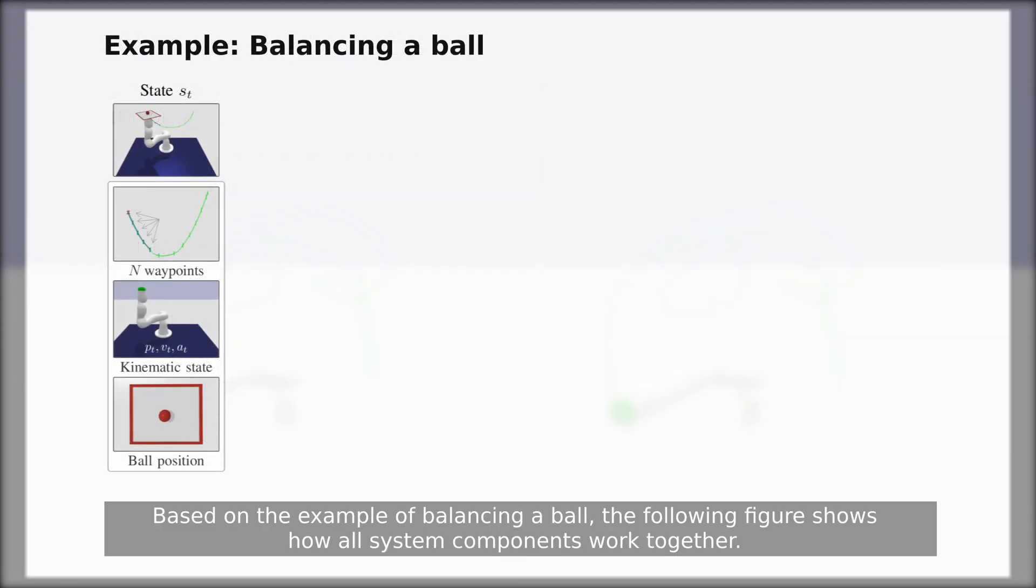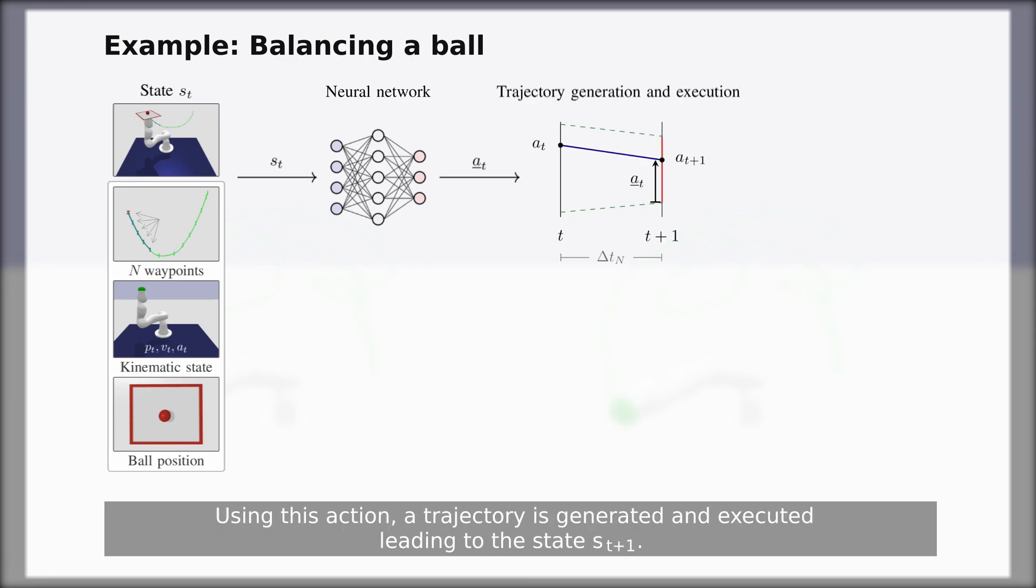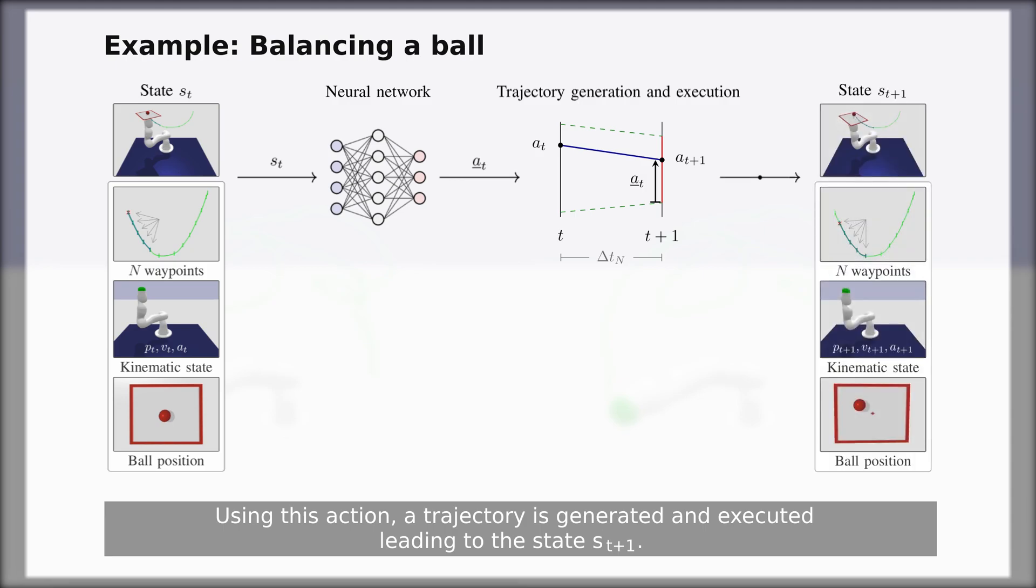Based on the example of balancing a ball, the following figure shows how all system components work together. Based on the state, the neural network outputs an action AT. Using this action, a trajectory is generated and executed leading to the state ST plus 1.